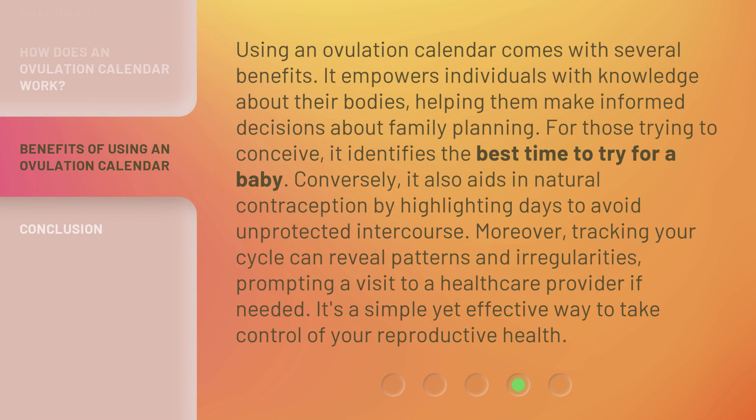Using an ovulation calendar comes with several benefits. It empowers individuals with knowledge about their bodies, helping them make informed decisions about family planning. For those trying to conceive, it identifies the best time to try for a baby. Conversely, it also aids in natural contraception by highlighting days to avoid unprotected intercourse. Moreover, tracking your cycle can reveal patterns and irregularities, prompting a visit to a healthcare provider if needed. It's a simple yet effective way to take control of your reproductive health.